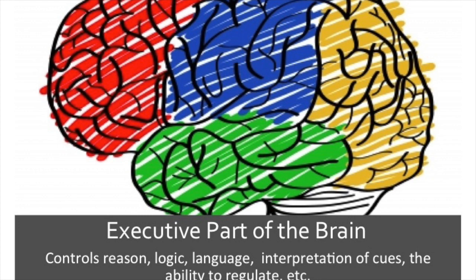I want to give you a brief overview of two basic parts of the brain. One is the executive part of the brain, shown here in the slide. It controls reason and logic and language, the ability to interpret cues and regulate your body. This part of the brain does not fully develop until well into your 20s, especially for men — which explains why sometimes your teenagers are still acting like they're three or four years old. When a child is born, this part of the brain does not develop much at all.